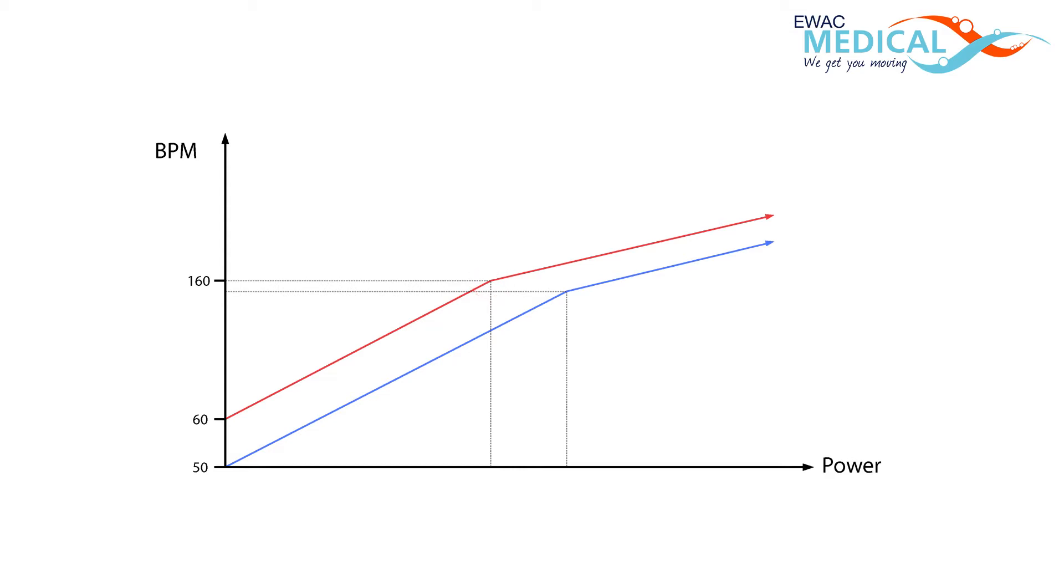At this point the body starts to switch from aerobic to anaerobic combustion. We call this the anaerobic threshold.